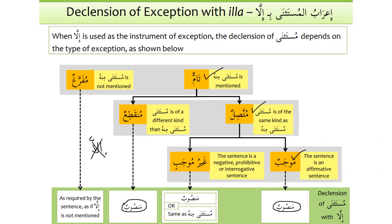If it is tamun, muttasilun and ghayru mujab, then there are two possibilities: mustathna can be mansoob, or it can be the same irab as mustathna minhu — in other words, it is the badal of mustathna minhu, a substitute from mustathna minhu.